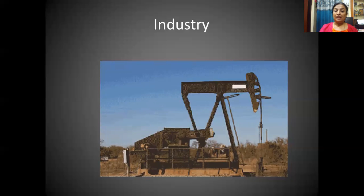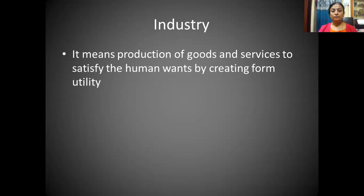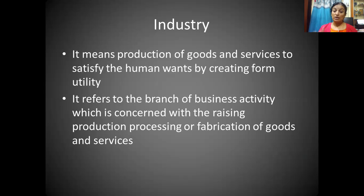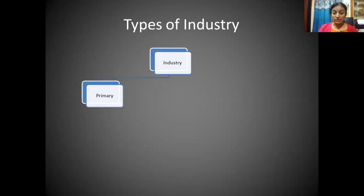Let us understand the meaning of industry. It means production of goods and services to satisfy human wants by creating form utility. As you know, human wants are unlimited, and to satisfy them we need goods and services to be produced. Industry helps us in producing those goods and services. It refers to the branch of business activity concerned with the raising, production, processing, or fabrication of goods and services.